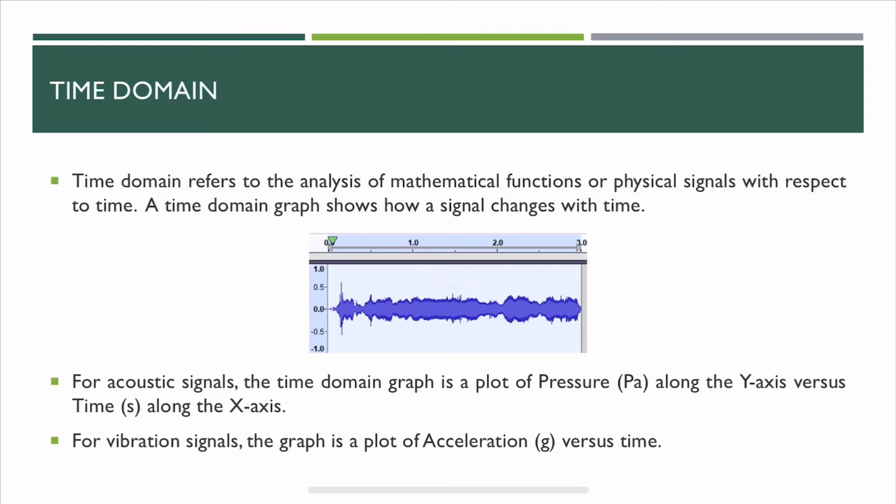First is time domain. Time domain refers to the analysis of signals with respect to time. The x-axis is always time. You can see a picture of a random signal has been captured for three seconds as evident from the picture. The time domain is with respect to time.